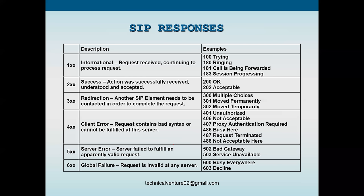3xx responses relate to redirection - another SIP element needs to be contacted to complete the request. Responses include 300 Multiple Choices, 301 Moved Permanently, and 302 Moved Temporarily. There are many possible messages in each category - these are just the most commonly encountered ones. 4xx is a client error - the request contains bad syntax or cannot be fulfilled at that time.